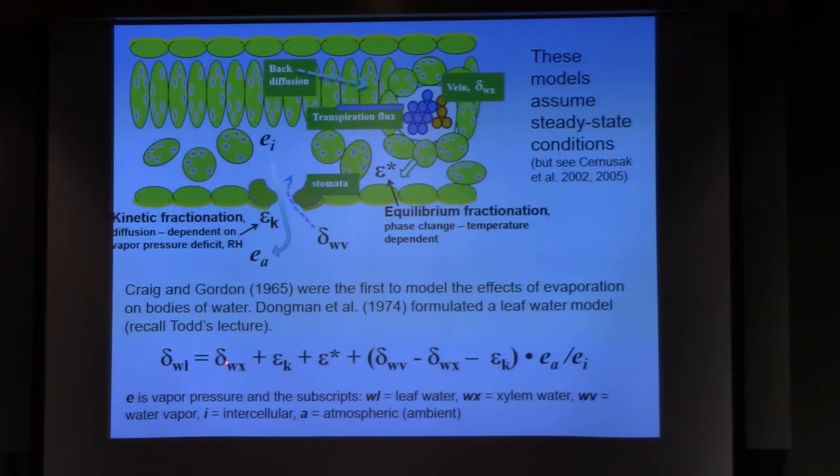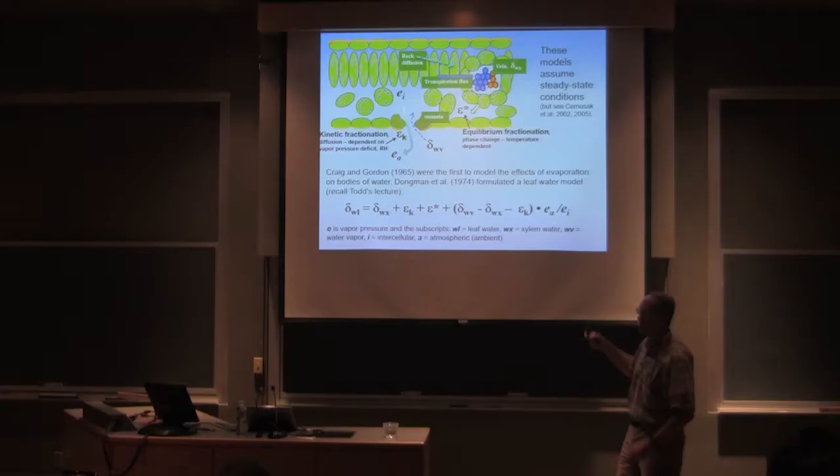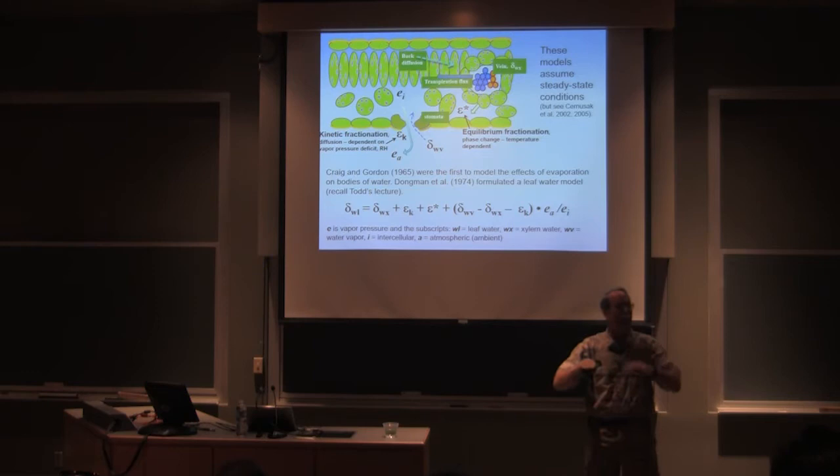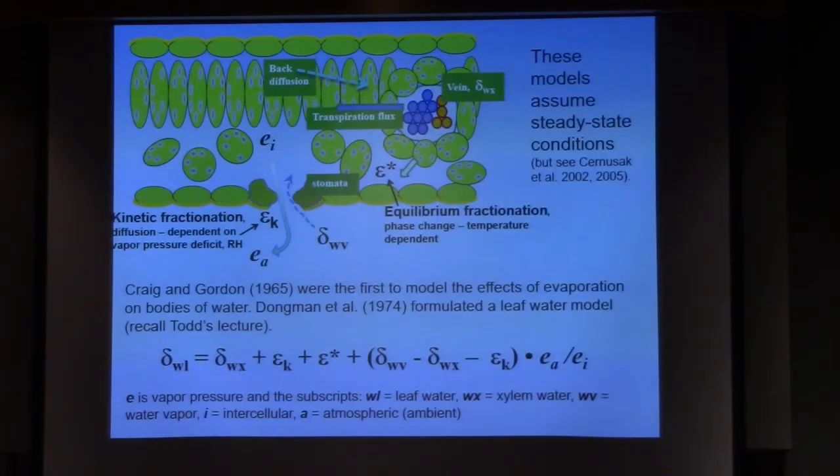This is the xylem water or source water coming up the veins. What is going into the leaf, right? At this point, there's evaporation. There's a phase change. That's an equilibrium reaction, right? Phase changes going in and out.